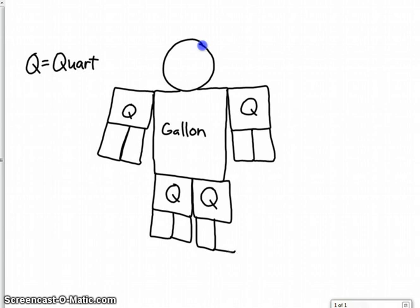Just like this. And again, I'm going to run out of room, so I'm going to put my P over here for pint. And then I will label my pints on my robot. One more over here. And we're good.